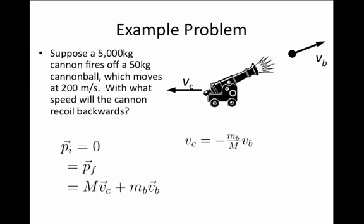That's in accordance with our intuition that if we have zero momentum initially and we must have zero momentum finally, then the momentum vector of the cannonball must point in the opposite direction of the momentum vector of the cannon.